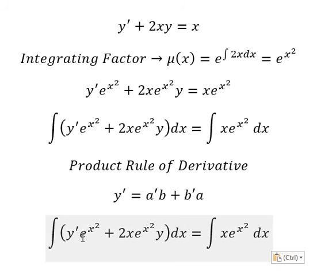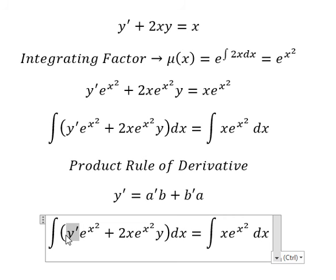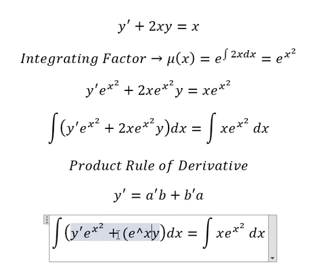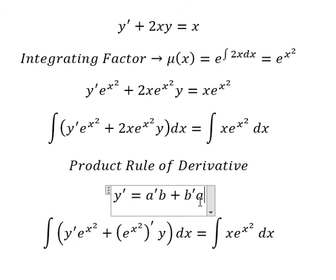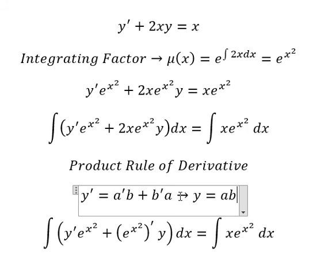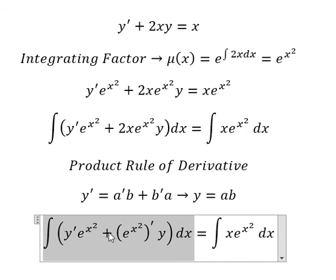So we have first derivative of a multiplied by b, this one, that is first derivative of b multiplied by a. So the integration of this one we have y equals to ab. So the integration of that one we have y times e to the power of x squared.